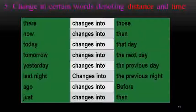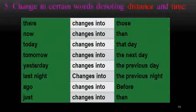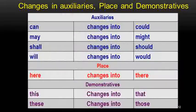The fifth rule: change in certain words denoting distance and time. 'There' changes to 'those'; 'now' changes to 'then'; 'today' changes to 'that day'; 'tomorrow' changes to 'the next day'; 'yesterday' changes to 'the previous day'; 'last night' changes to 'the previous night'; 'ago' changes to 'before'; 'just' changes to 'then'. These are the changes to keep in mind when changing direct into indirect speech.